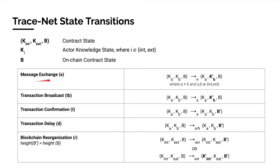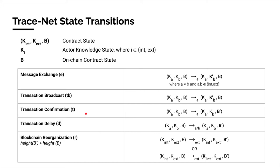There are five types of state transitions in Tracenet. A direct message between the actors is called the message exchange transition, which leads to an update in the recipient's knowledge. A transaction broadcast occurs when a valid transaction is broadcast to the network but not yet appended to the blockchain. The observer can update its knowledge if this transaction includes previously unknown information. When the transaction is confirmed in the blockchain, a transaction confirmation transition occurs, updating our on-chain contract state. A transaction delay is modeled as an increase in the blockchain height. Finally, the external actor can also initiate a blockchain reorganization up to a depth R.